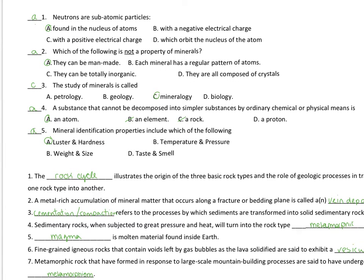On to a little bit of chemistry. Neutrons are subatomic particles found in the nucleus of atoms. They have a neutral charge. What you'd also find in the nucleus would be a proton. Surrounding the nucleus are going to be the negatively charged electrons.